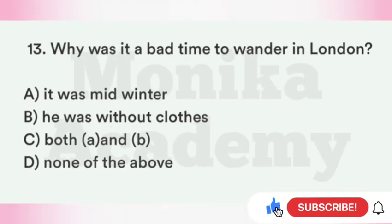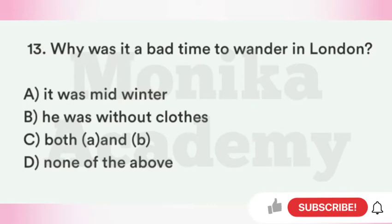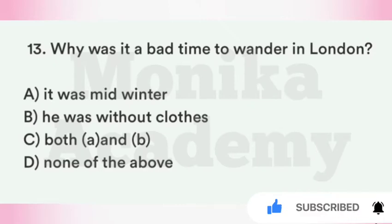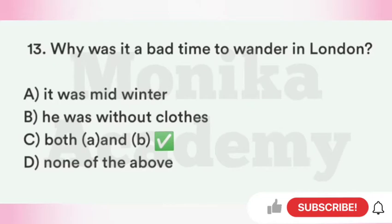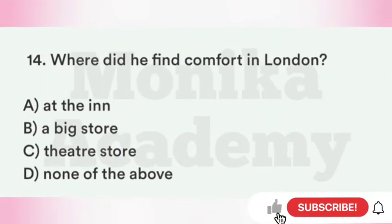Question 13: Why was it a bad time to wander in London? Option A: It was mid-winter — बहुत ज़्यादा ठंड थी. Option B: He was without clothes — Griffin बिना कपड़ों के घूम रहा था. Option C: Both A and B. Option D: None of the above. The correct answer is C, Both A and B — mid-winter था और Griffin के पास पहनने के लिए कपड़े नहीं थे.